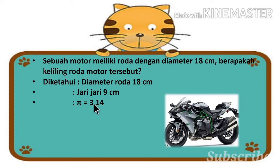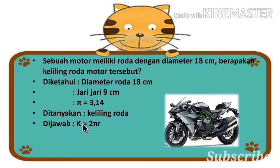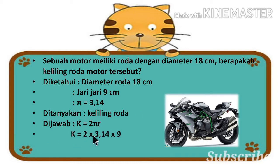Kemudian, yang ditanyakan adalah berapakah keliling roda motor tersebut? Maka kita jawab: keliling lingkaran rumusnya adalah 2 dikali π dikali r. Sekarang kita masukkan angka-angka yang diketahui tersebut ke dalam rumus. Keliling sama dengan 2 dikali 3,14 dikali 9. Di sini, 3,14 adalah nilai π dan 9 adalah r (jari-jari).